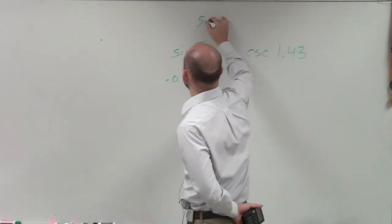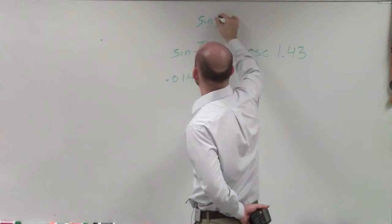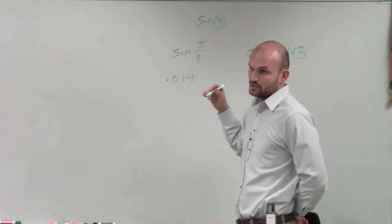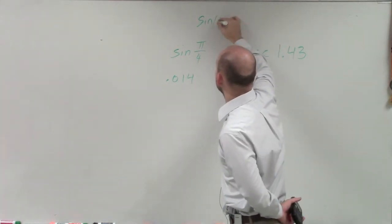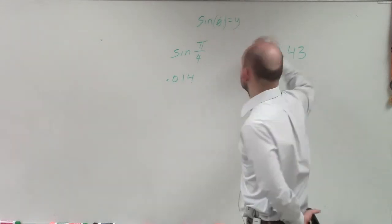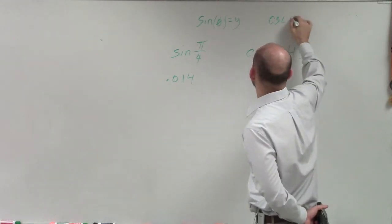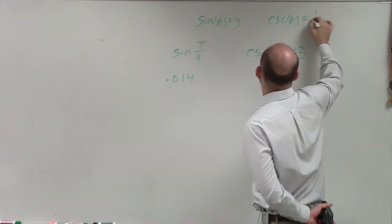Remember when I talked about points on the unit circle, I said sine of θ equaled the y-coordinate. And cosecant of θ equaled 1 over y.